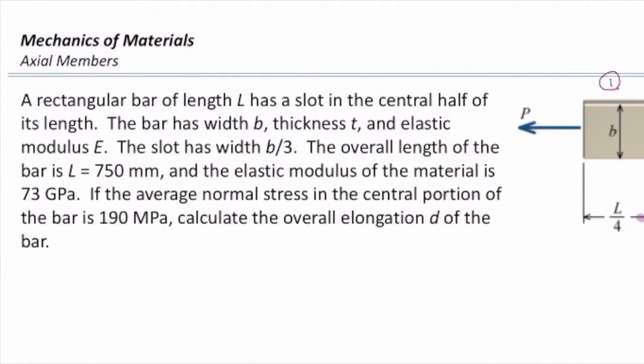The slot has width B over 3. The overall length of the bar is 750 mm, and the elastic modulus of the material is 73 GPa. If the average normal stress in the central portion of the bar is 190 MPa, calculate the overall elongation of this bar.